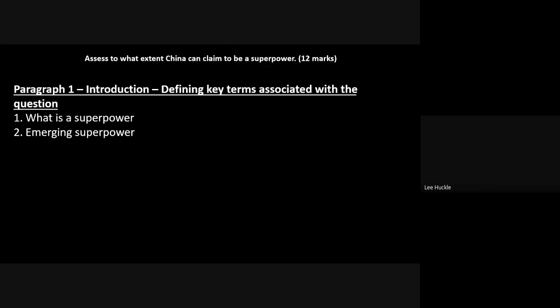So your first paragraph is going to be your concise, brief introduction. Define your key terms that are associated with or hidden within the question itself. Have a look at that question again — what key terms are important that you need to define? The first one has got to be: what is a superpower? There are different pillars of what a superpower is; it's not just GDP or size of economy, there is more to it than that.